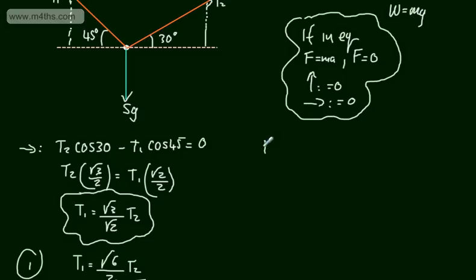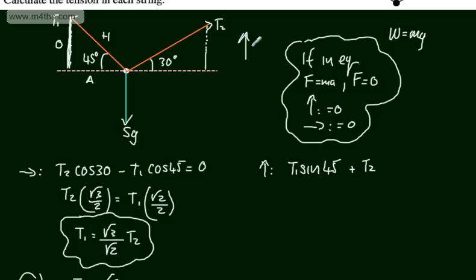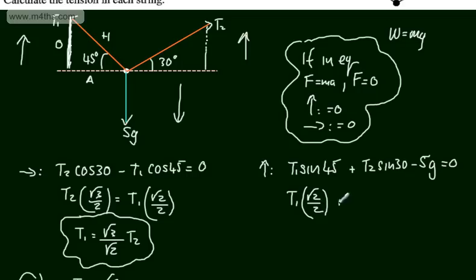Now resolving vertically: the vertical components of T1 and T2 must balance the weight. T1 sin 45 plus T2 sin 30 minus 5g equals zero. Using exact values: T1 times root 2 over 2, plus T2 times 1/2, equals 5g.